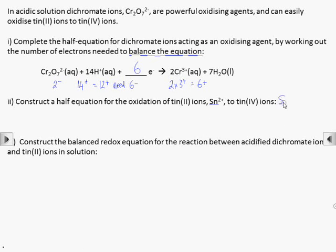To write the half equation for the oxidation of Sn²⁺ ions to Sn⁴⁺, we firstly write down the ions that are involved in the reaction. Then we balance the charges. In this case, we need to add 2 electrons, which are negatively charged, on the right side.